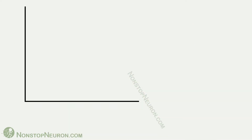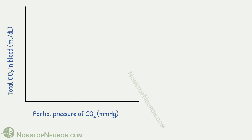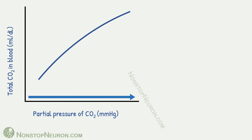Let's see the curve now. Here, the x-axis shows partial pressure of carbon dioxide, and the y-axis shows total carbon dioxide content in all the forms. The curve looks like this — as partial pressure of carbon dioxide increases, its total content in blood also increases.